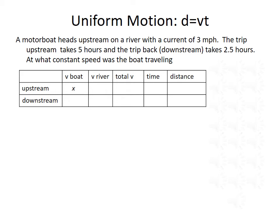Let's start with the velocity of the boat. We don't know it, but it was the same going upstream and downstream, so let's represent it by the variable X. When the boat was traveling upstream, it goes against the current of the river, so since the river goes at three miles per hour, we'll do minus three for the upstream velocity. When the boat is traveling downstream, it goes with the river, so we'll do plus three. Our total velocity upstream is X minus three, and the total velocity downstream is X plus three.